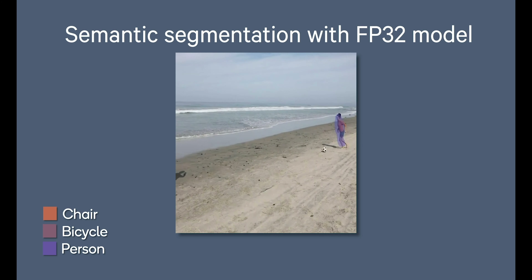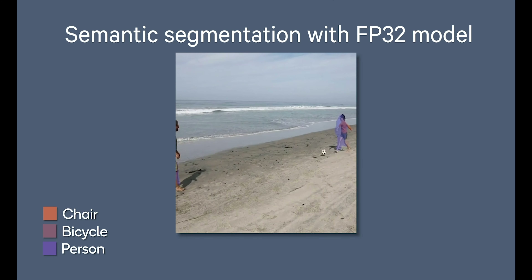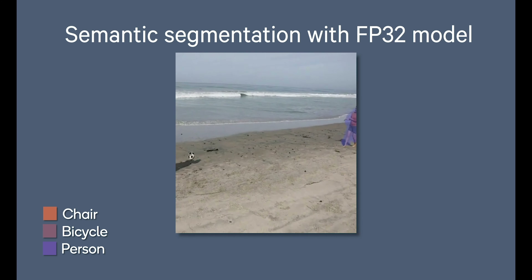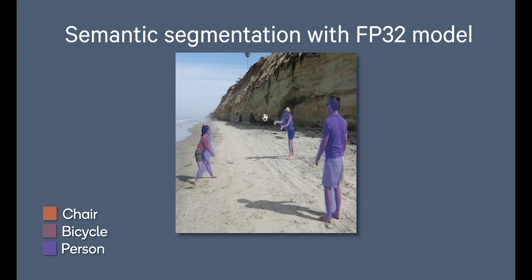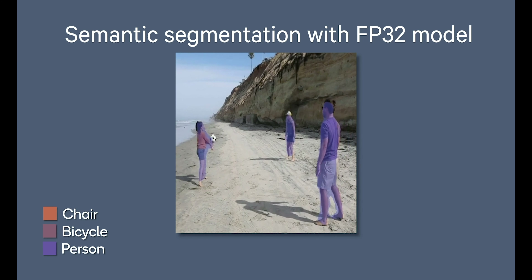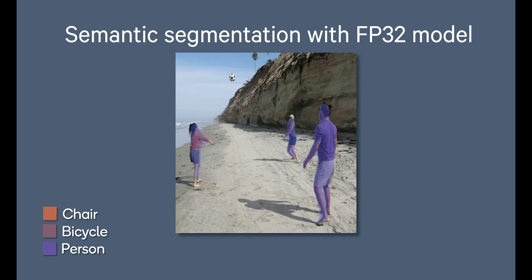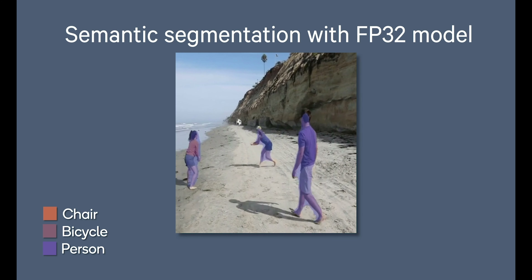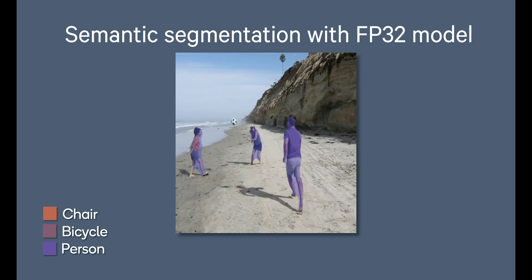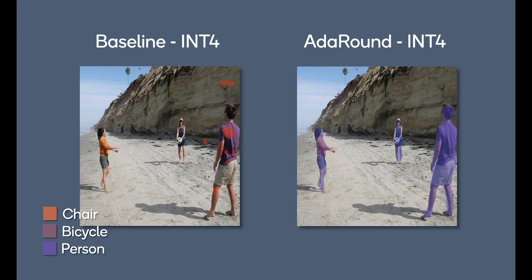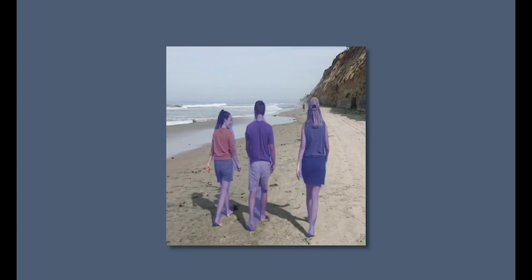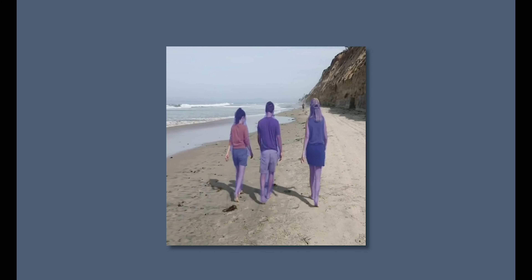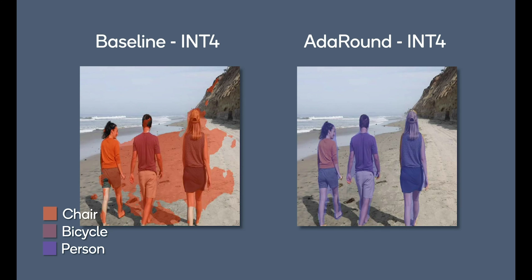Semantic segmentation is a computer vision technique that classifies each pixel of an image or video to a particular class. Here we compare baseline 4-bit quantization versus 4-bit quantization with AdAround. Activations are 8-bit quantized in both cases. Baseline 4-bit quantization completely fails to segment people, while AdAround correctly segments all three persons. With AdAround's 4-bit quantization, accuracy is comparable to the original floating point model.